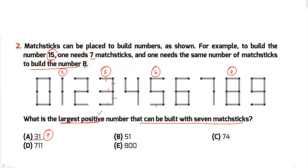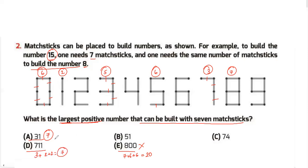Since they're asking for the largest positive number, let's start with option E. Option E is 800 — the digit 8 needs 7 sticks and 0 needs 6, so 800 would need 20 matchsticks total, which is too many. For option D, which is 71: the digit 7 needs 3 sticks and 1 needs 2, giving 5 — wait, 3 plus 2 is 5... actually 7 needs 3 and 1 needs 2, totaling 5. Using elimination, since 800 is not possible, my answer is D.